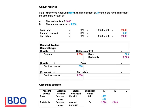Cilia's insolvent received 500 rand as a final payment of 20 cents in the rand. The total debt is 100%, the amount received is 20% of the debt, and the bad debts is 80% of the debt. The amount given is the amount received, so 20% of the debt equals 500 rand. If I want to calculate the bad debts — the percentage I want to know, 80, at the top, divided by the one that we know, 20, times 500 — that will give me 2000 rand. The balance of the debtors is 2,500.